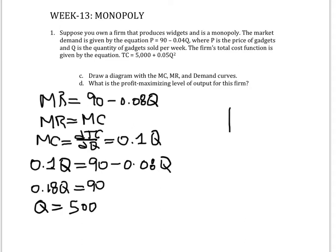So let's start doing the diagram here as we solve this problem. This is Q, this is P, and we know that this intercept here is 90, and the marginal cost curve looks like it's a straight line. So let's say that this is marginal cost.